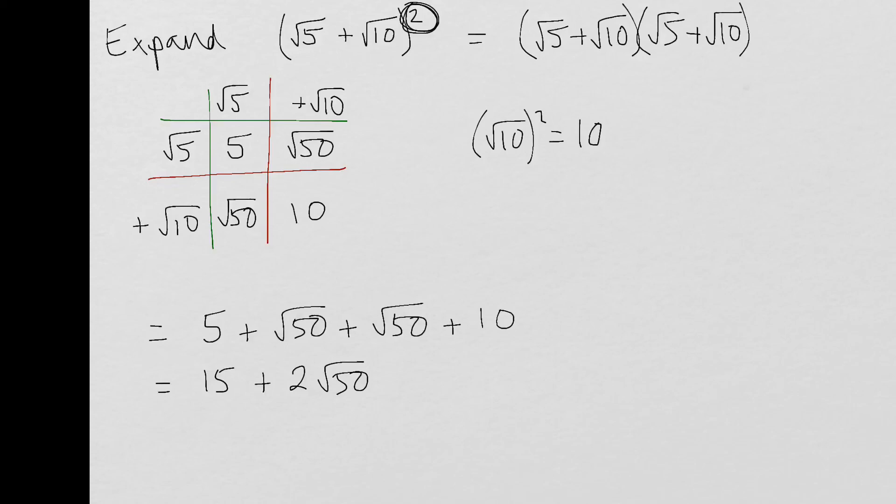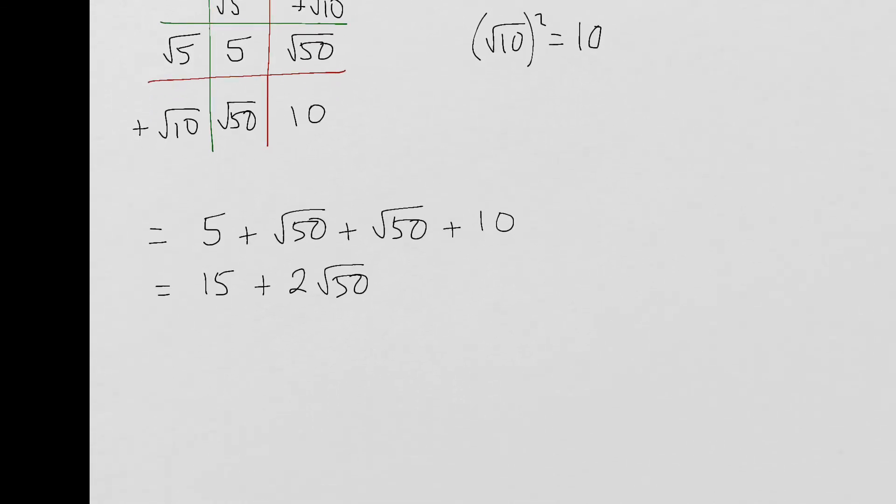But with the square root of 50, that's quite a large number. So we should put the effort in to see if we can simplify it before leaving the question here. So thinking about 50 and thinking about my square numbers, I know that factors are 50 so we've got 1 times by 50. The next set there is 2 times by 25. Now 25 is a square number, so 15 plus 2√(25×2).